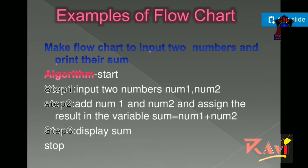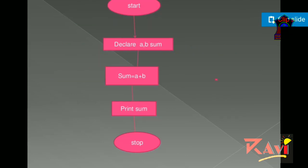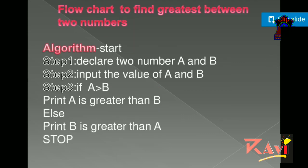This is the simple example of a flowchart. So here, start, declare a, b, sum, sum equals to a plus b, print sum, stop. These are some of the examples of flowchart.